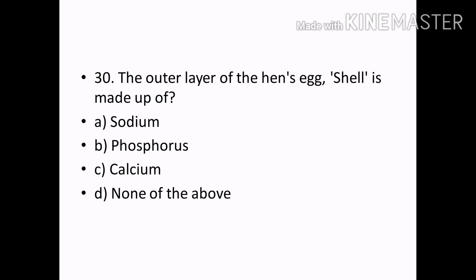The outer layer of the hen's egg shell is made up of: Options — Sodium, Phosphorus, Calcium, none of the above. Correct answer: Option C — Calcium.